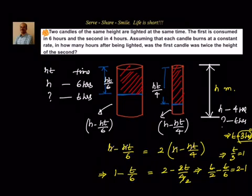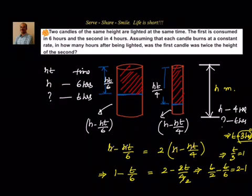After 3 hours, the first candle height will be twice the second candle height. Let's summarize: two candles of the same height are lighted at the same time. The first is consumed in 6 hours, the second in 4 hours. Assuming each candle burns at a constant rate, we need to find how many hours after being lighted the first candle is twice the height of the second.